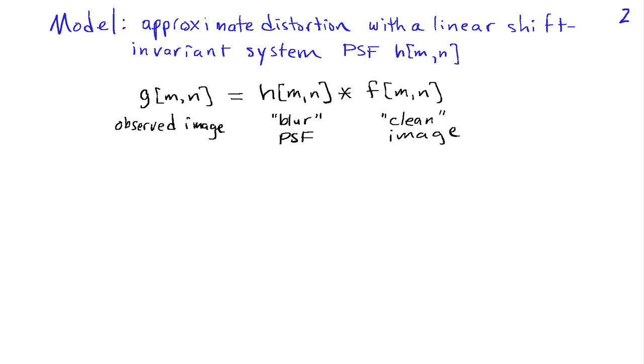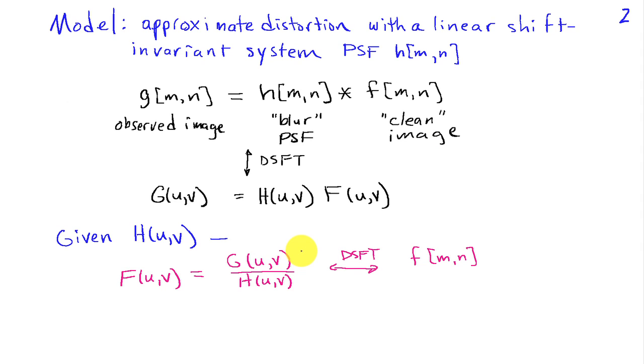We are going to consider a fairly simple case, and that is where we model the distortion as the effects of a linear shift invariant system with a point spread function H of M. What we observe is the point spread function of the blur convolved with the clean image. If we take a discrete space Fourier transform, this convolution converts to multiplication, and we have the observed discrete space Fourier transform as the product of the point spread function and the clean image discrete space Fourier transform.